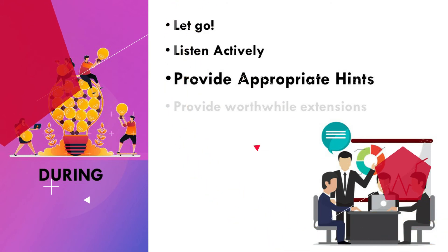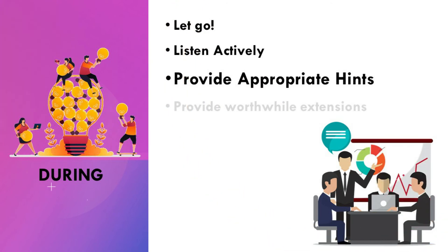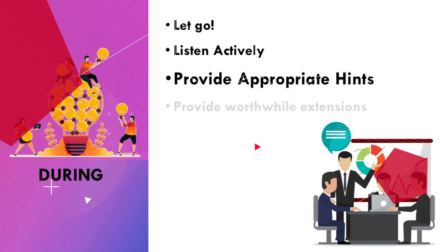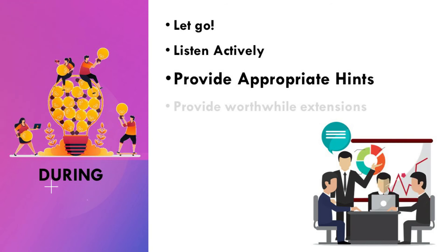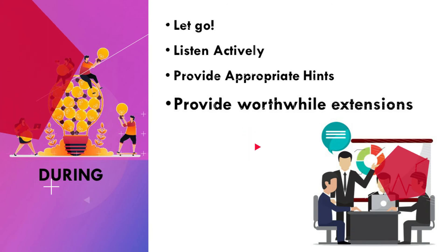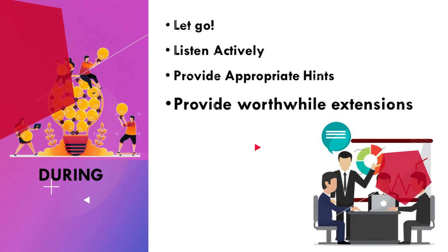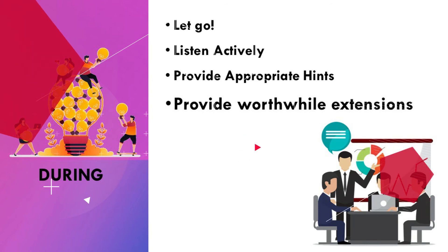And number three, provide appropriate hints. You might suggest to the learners to use manipulatives, draw a picture, or make a table if one of these ideas seems appropriate. And lastly, provide worthwhile extensions. Early finishers can often be challenged in some manner connected to the problem, just solved without it seeming like extra work.